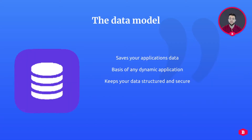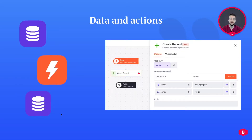The BuddyBlocks data model itself can be found by clicking on the data model icon in the menu on your left-hand side. A data model is a visualized, simplified representation of information stored inside an application. An example would be saving some information about projects — for this you would create a project model. This project model has properties describing the features of a project, for example a name and a status. This data can then be displayed on a page or changed with the use of actions.